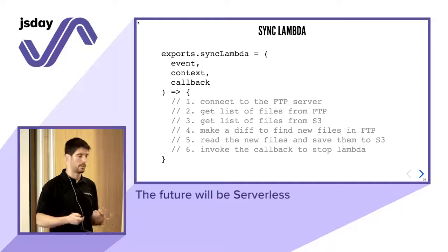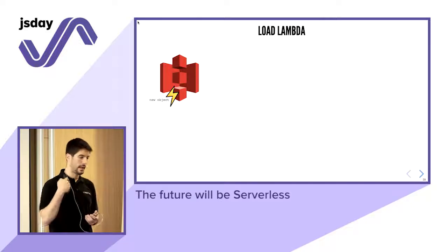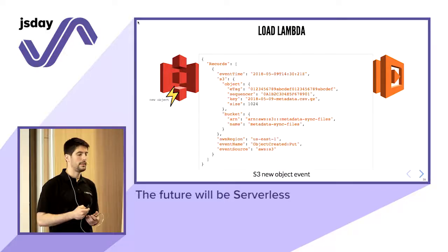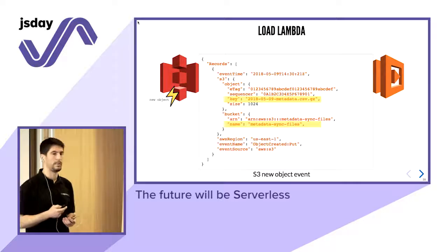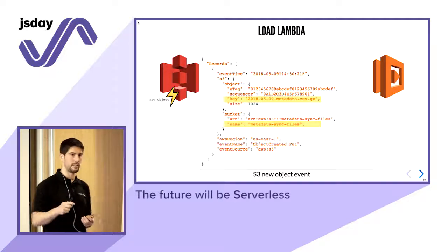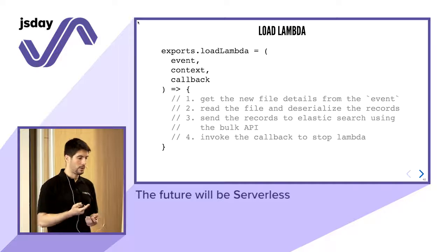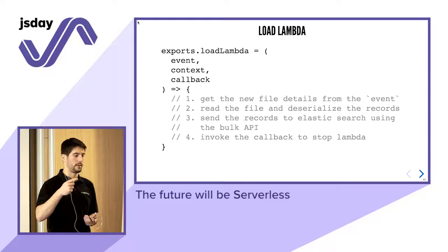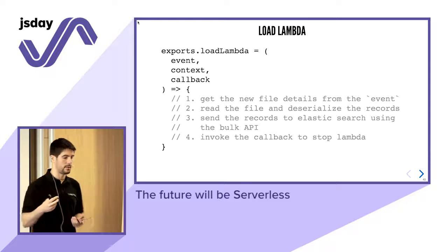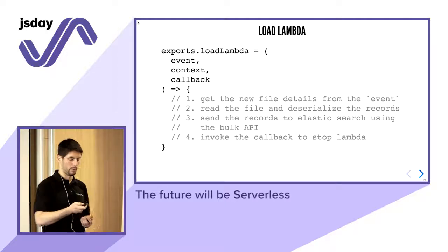The second Lambda — the load Lambda — is triggered every time there is an S3 object event. This time the event is more interesting: it tells us the file name and the bucket name. In step one we read these parameters from the event, then read the file and deserialize the records, then use the bulk API from Elasticsearch to store this data, and finally invoke the callback.